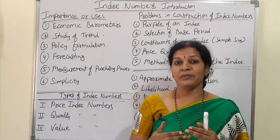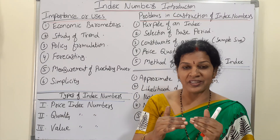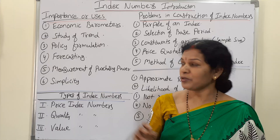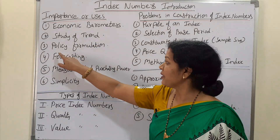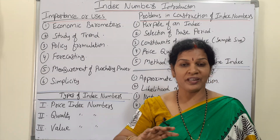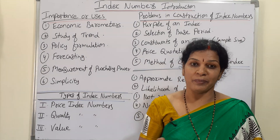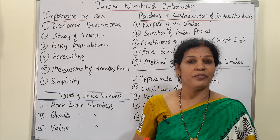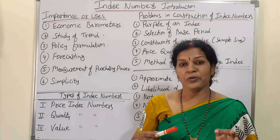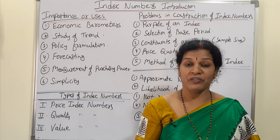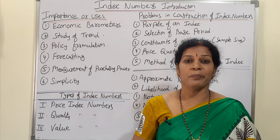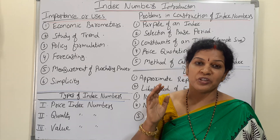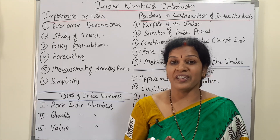The second use is study of trend. These indicators will give you different kinds of trends — what is happening presently, what comes next — so we can study trends through index numbers. The third use is policy formulation. If you want to make any kind of policies — whether you are running a company, a state, or a district — related to dividends, manufacturing, production, or prices, index numbers help you decide what to do next based on the results.